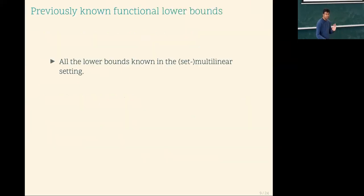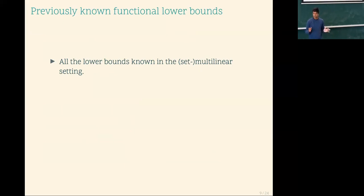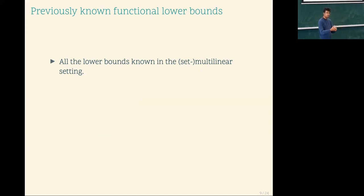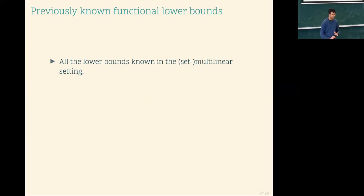Some previously known functional lower bounds: any multilinear circuit lower bounds are also functional. This crucially uses the fact that if two polynomials are equivalent over the Boolean hypercube and they are multilinear, they are the same polynomial. So showing a lower bound in the syntactic setting also translates to the functional setting. This is part and parcel of the technique introduced by Raz, using a partial derivative matrix which is also equivalent to an evaluation matrix.